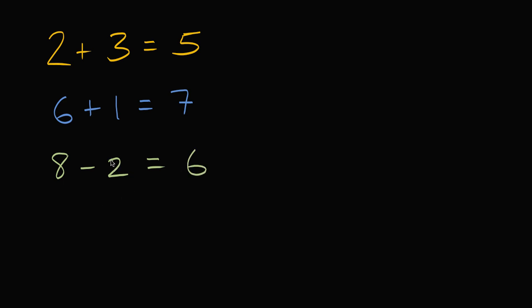And in all of these, you might think that the equal sign just says give me the answer. Figure out what two plus three is. Two plus three, well, the answer is five. Six plus one, the answer is seven. Eight minus two, the answer is six. That's not quite right.